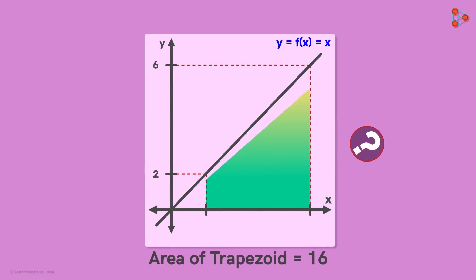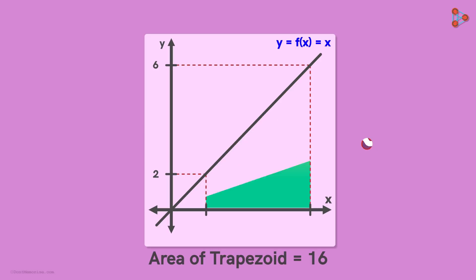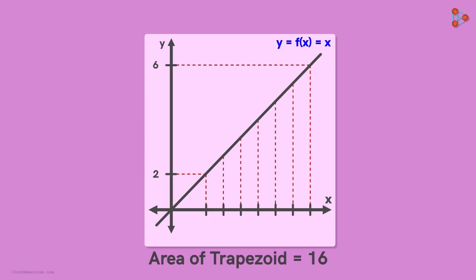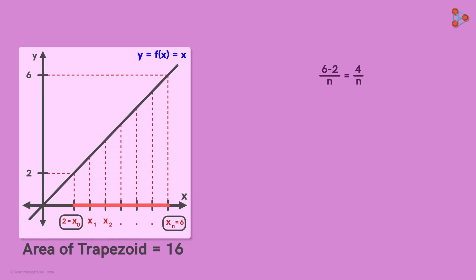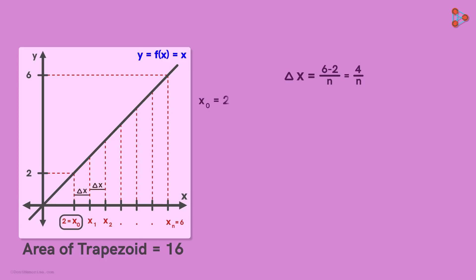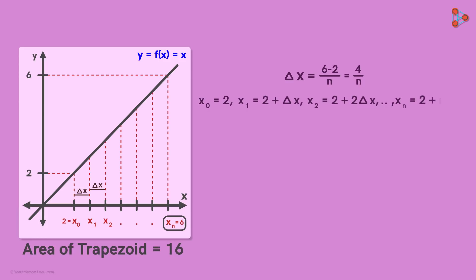How do you think we can find this area using integration? We divide this interval into n equal sub-intervals. Notice that the width of this interval is 6 minus 2, that's 4. So the width of any sub-interval will be equal to 4 over n — let's denote it by delta x. This enables us to express the sub-intervals in terms of delta x: x0 equals 2, x1 equals 2 plus delta x, x2 equals 2 plus 2 times delta x, and so on. In the end, xn equals 2 plus n times delta x, which equals 6.